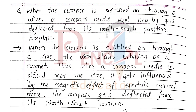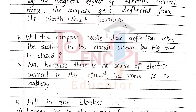Sixth one, when the current is switched on through a wire, a compass needle kept nearby gets deflected from its north-south position — explained. When the current is switched on through a wire, the wire starts behaving as a magnet. Thus, when a compass needle is placed near the wire, it gets influenced by the magnetic effect of electric current. Hence, the compass gets deflected from its north-south position.